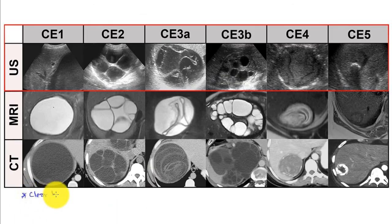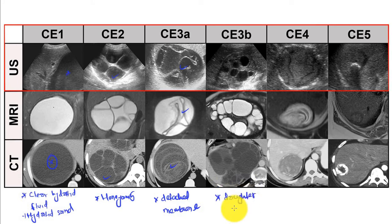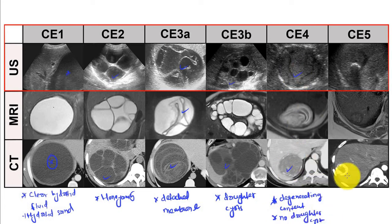So this is CE1 with clear hydatid fluid and hydatid sand in the ultrasound and CT picture. This is CE2, that is honeycomb appearance. CE3A, that is detached membrane. CE3B, that is daughter cysts. CE4: degenerating contents and no daughter cysts. CE5: solid cysts and calcified wall.